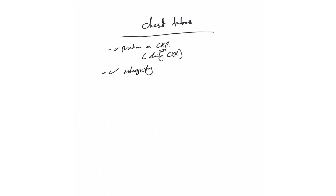Continue this inspection down to the drainage unit. Do this with the help of the nurse — sometimes we can just ask nurses because that's part of their assessment, and they'll tell us if everything is okay. But it's very important that you know how to do it yourself, so part of our daily assessment is making sure the circuit is connected and not detached.